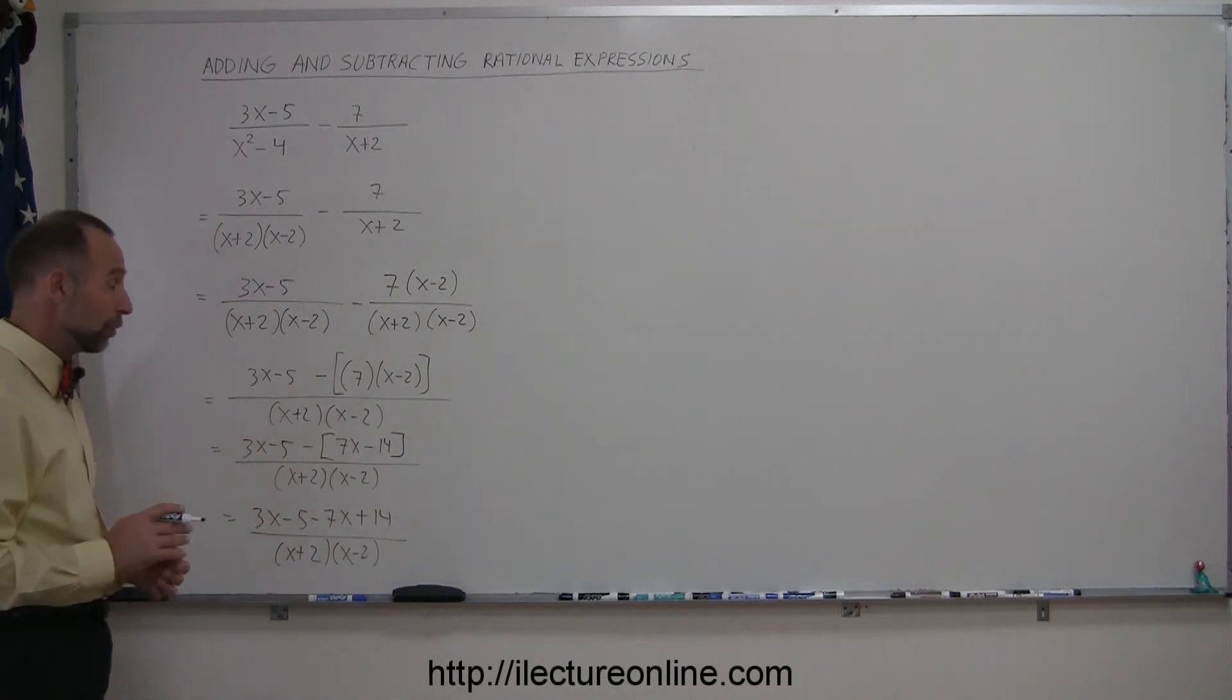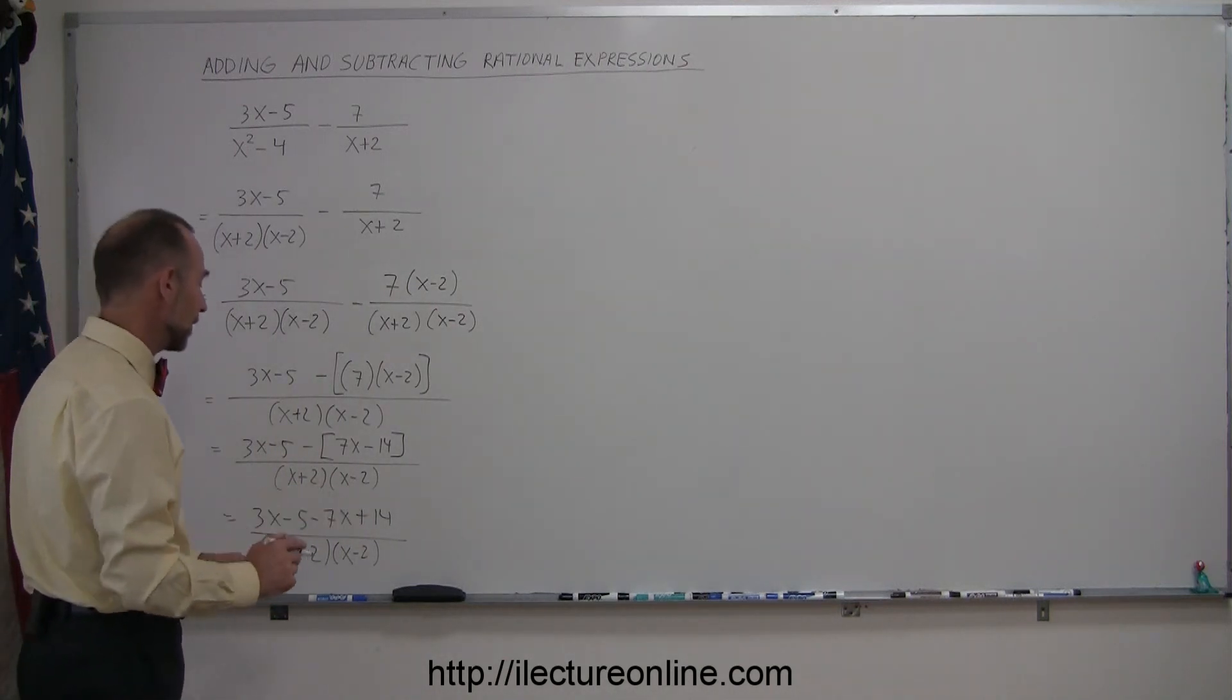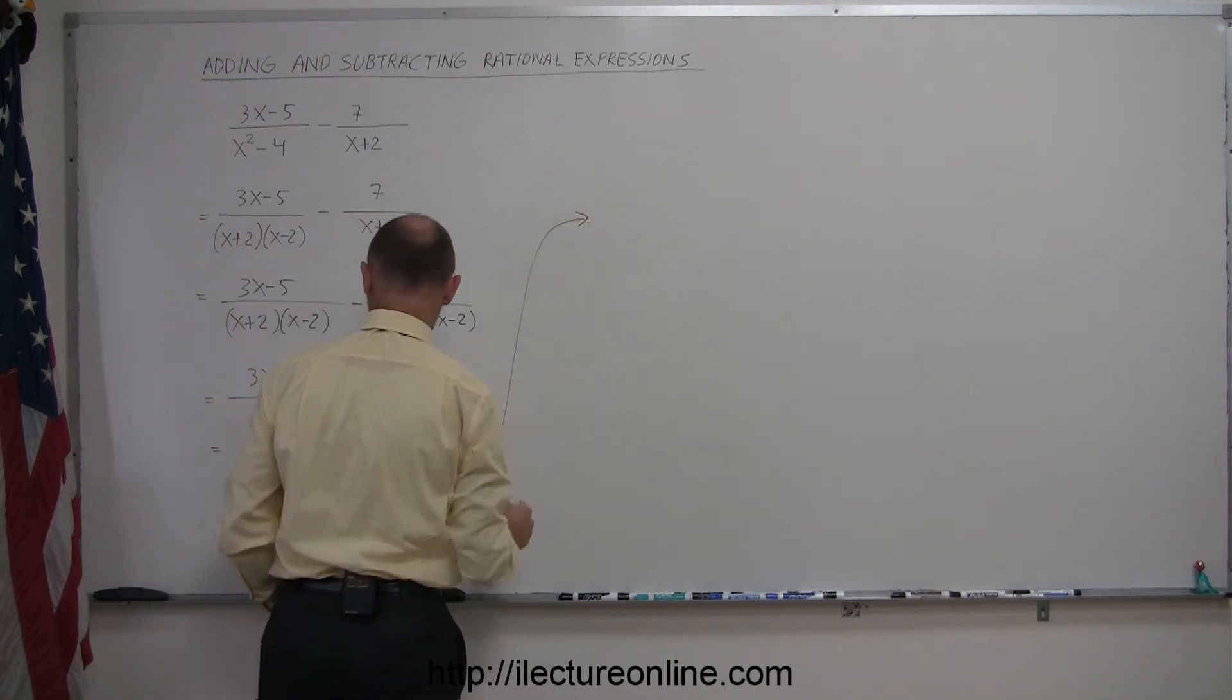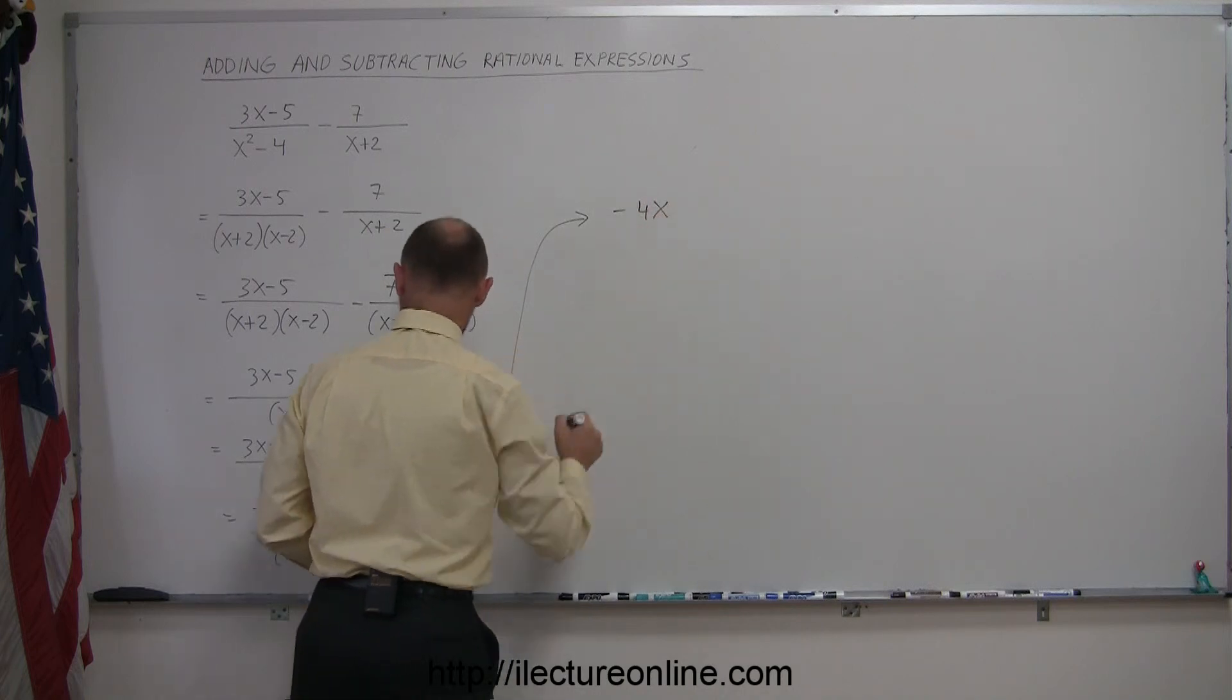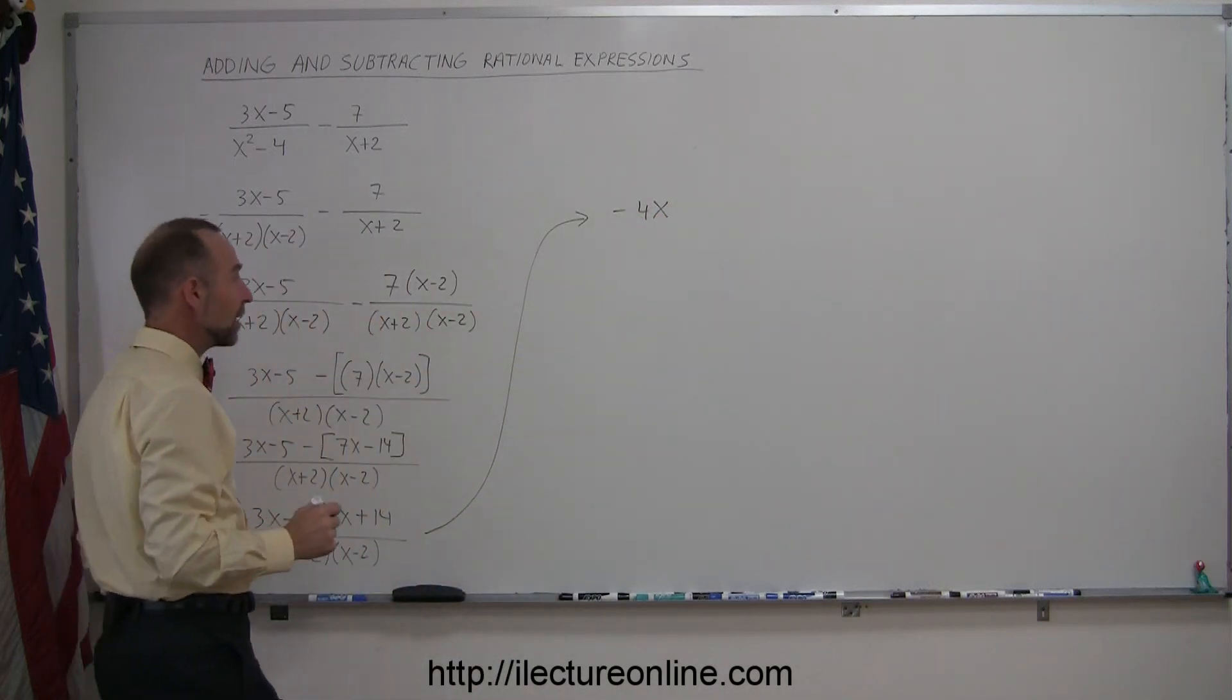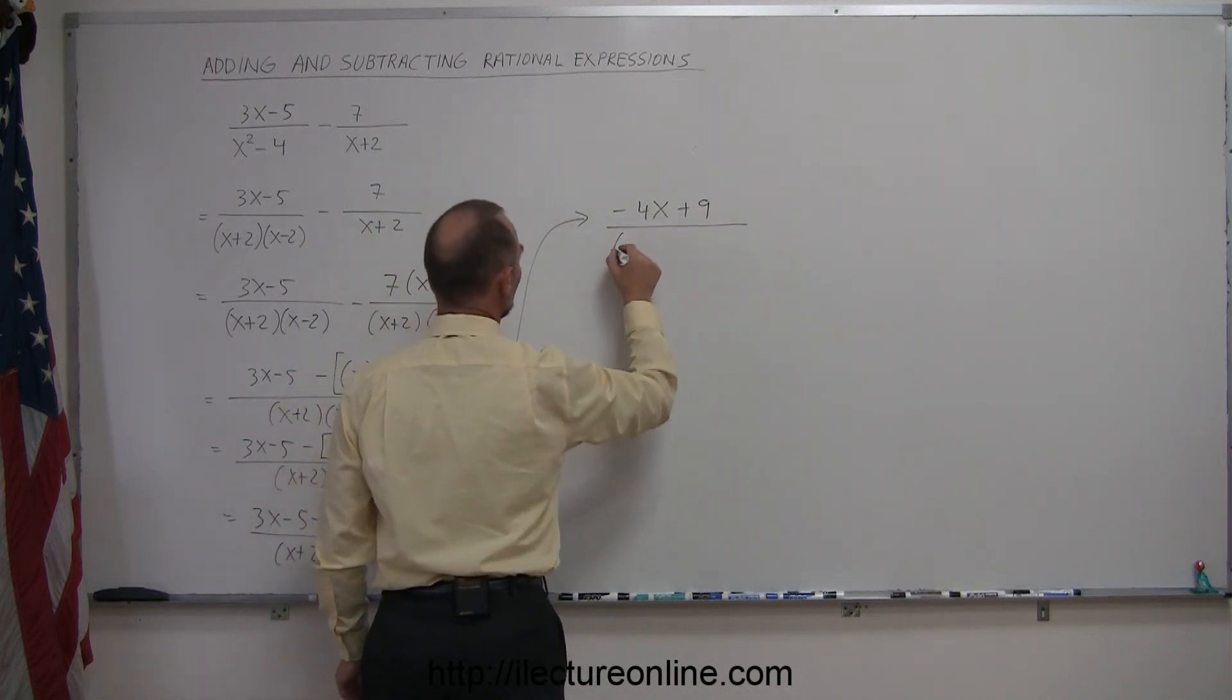Then you'd want to combine like terms. We have 3x and minus 7x, minus 5 and 14, so we're going to combine those. 3x minus 7x is minus 4x, and minus 5 plus 14 is plus 9, and divide the whole thing by x plus 2